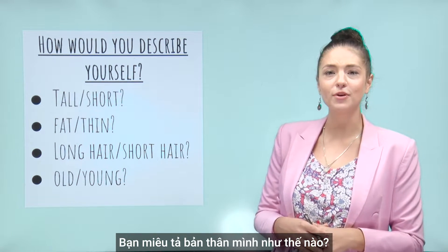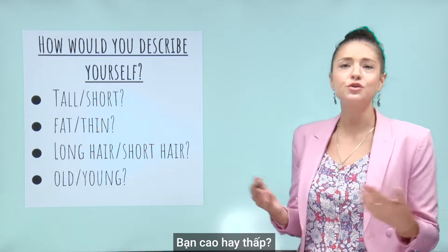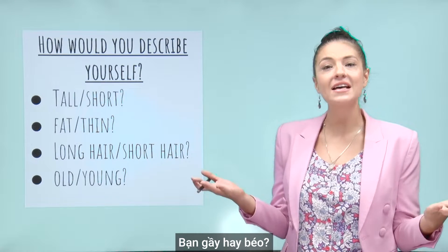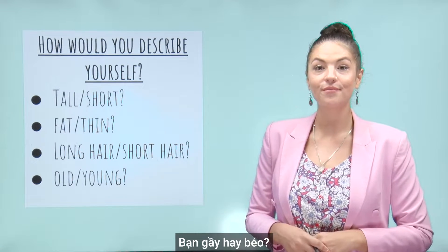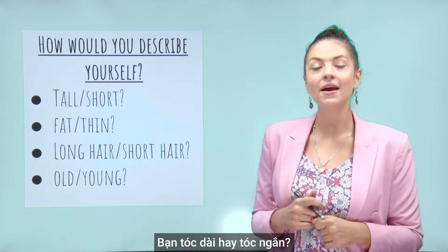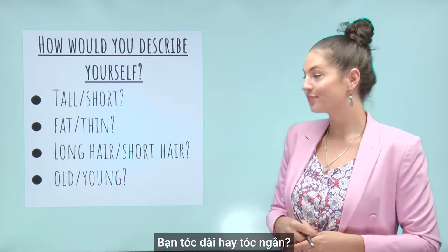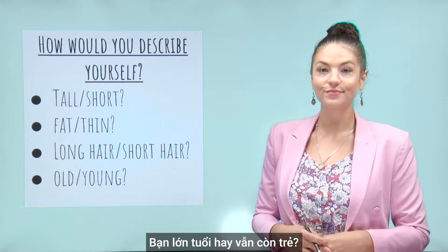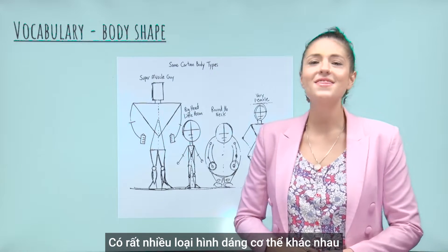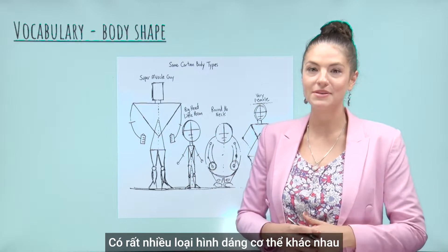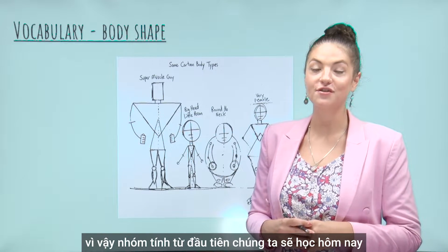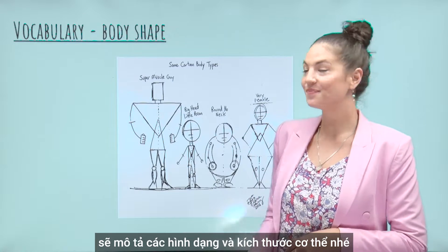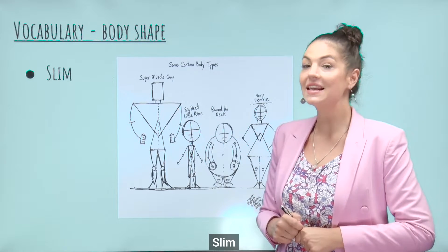How would you describe yourself? Are you tall or short? Are you fat or thin? Do you have long hair or short hair? And are you old or young? There are lots of different body types. So the first set of adjectives we'll learn today will describe different body shapes and sizes. Slim.